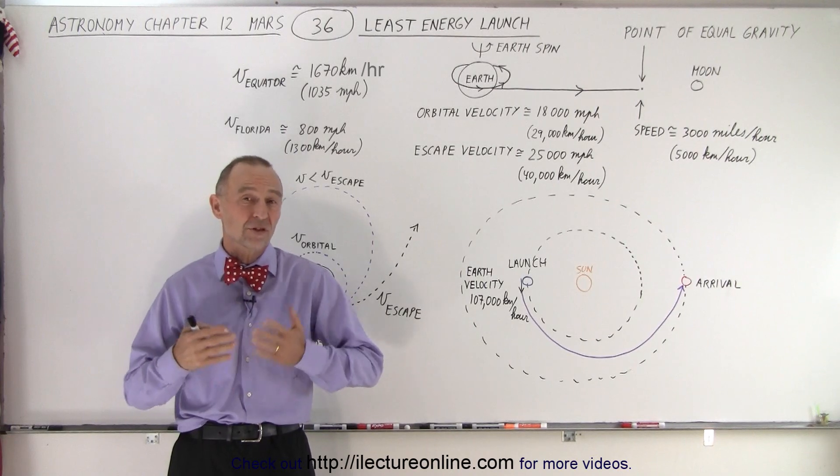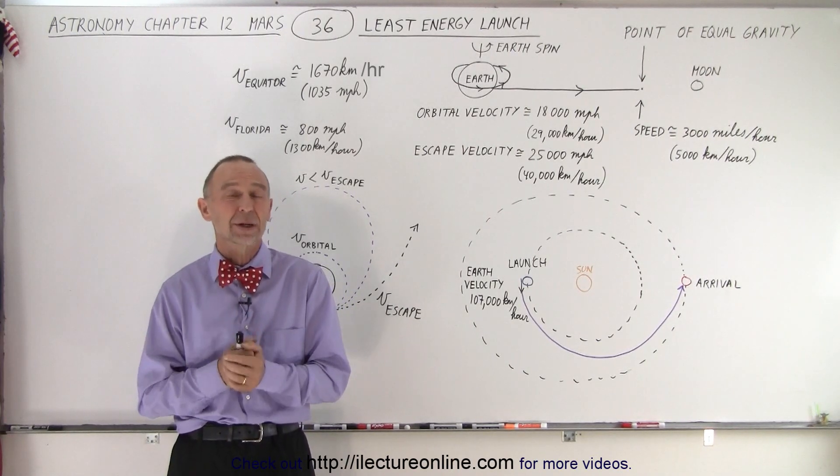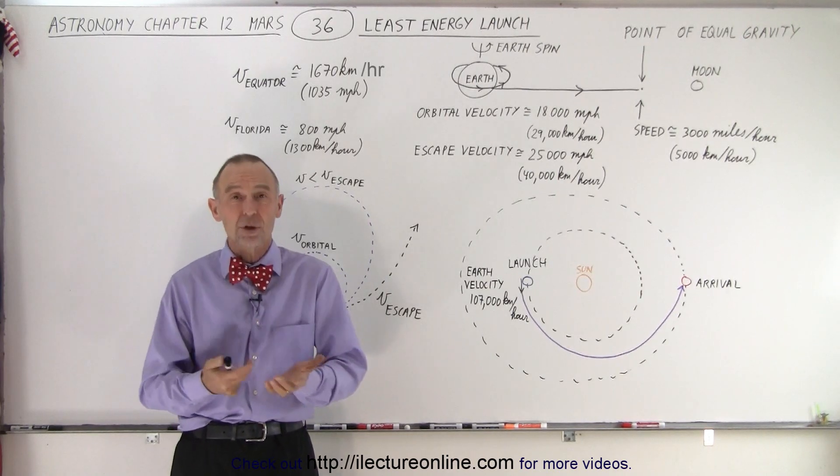The Apollo rockets that were used to send men to the moon were some of the most powerful rockets ever built, and they required about 7 million pounds of fuel to get to the moon.